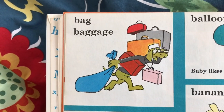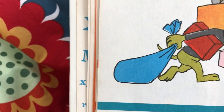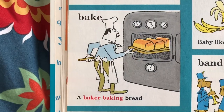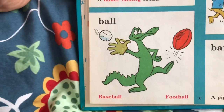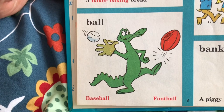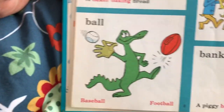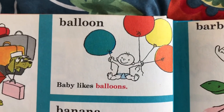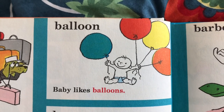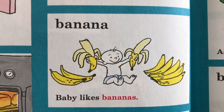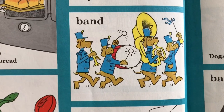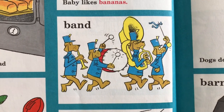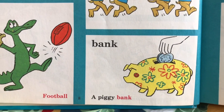Bag. Baggage. Bake — a baker baking bread. Ball. Baseball. Football. Balloon — baby likes balloons. Banana — baby likes bananas. Band. Bank — a piggy bank.